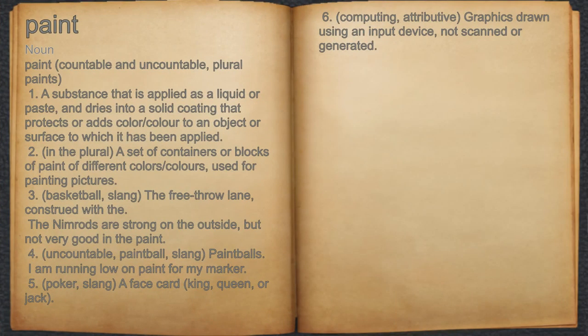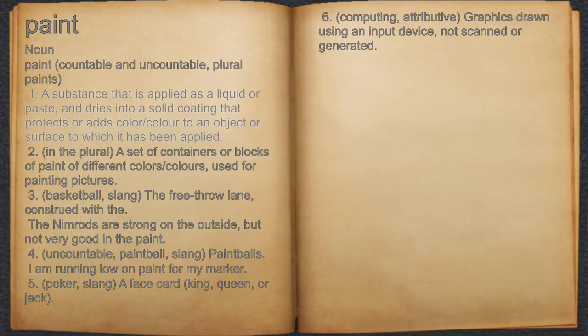Paint. Noun. 1. A substance that is applied as a liquid or paste, and dries into a solid coating that protects or adds color to an object or surface to which it has been applied.